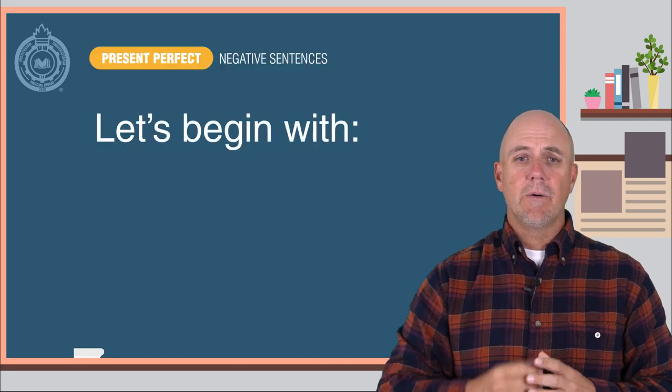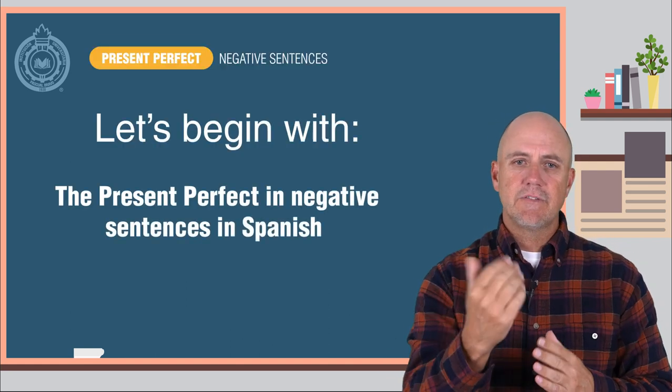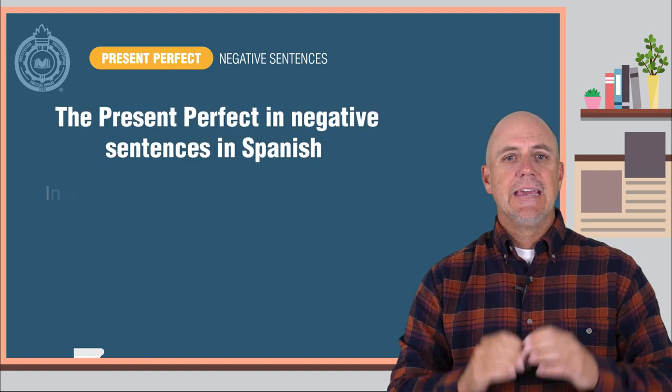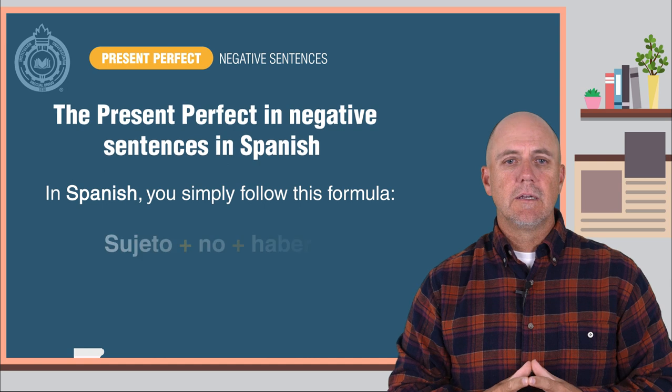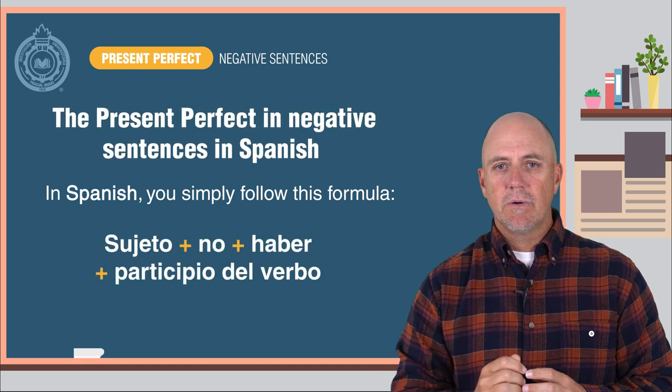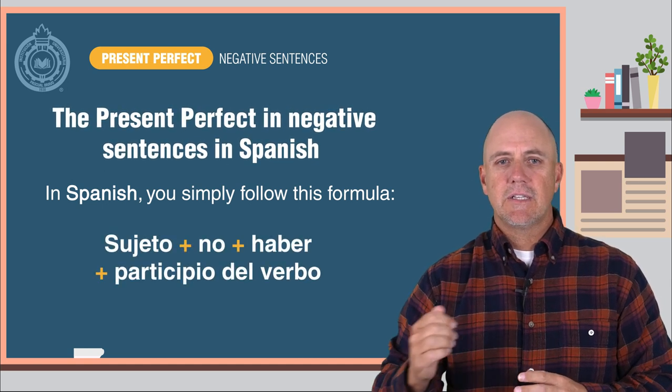Let's begin with what you already know, the present perfect in negative sentences in Spanish. In Spanish, it is very easy. You simply follow this formula: el sujeto más no más haber más el participio.